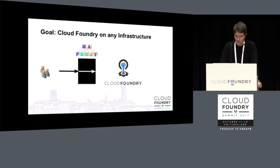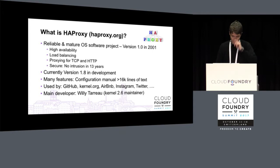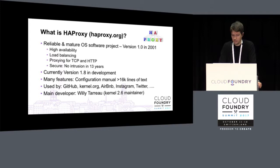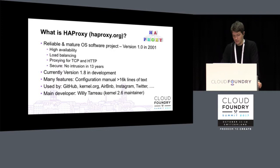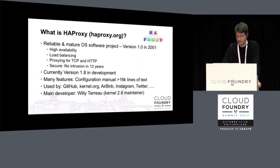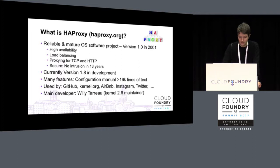HAProxy is a very reliable and major open source project. Version 0.1 was released in 2001, and since then it has been constantly developed and improved. Currently version 1.8 is in development. It focuses on high availability, load balancing, and proxying for TCP and HTTP, and it's also very secure — no intrusion in 13 years. The configuration manual alone has 16,000 lines of text. Everything you can think of you can configure with HAProxy. It's also used by major players like GitHub, Kernel.org, Airbnb, and Instagram. The main developer, Willy Tarot, is also a Linux kernel maintainer.